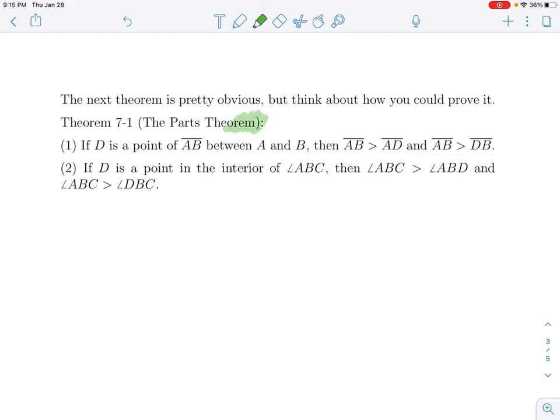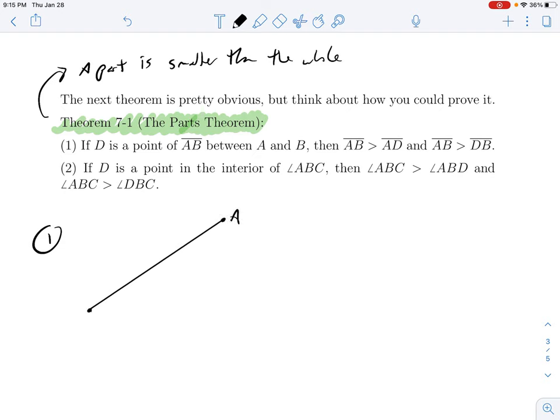A theorem that'll come in really handy. This is one of these theorems that's very obvious, but it's nice to have a name for it. It's called the Parts Theorem. And basically the gist of the parts theorem is it says a part is smaller than the whole. And it says that in the context of distances and in the context of angles. So for part one, it says if D is a point of the segment AB between A and B, here's A, here's B, here's D.